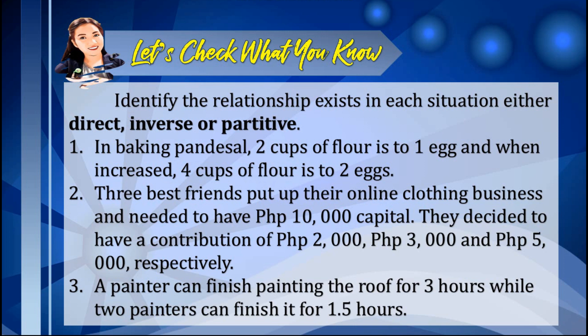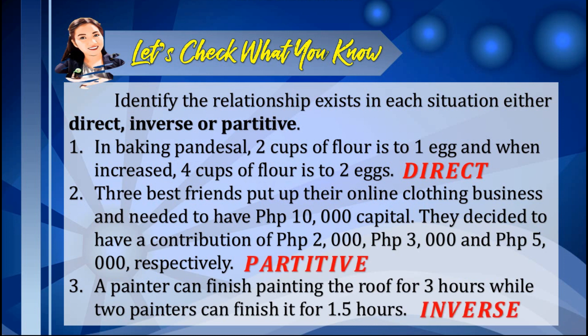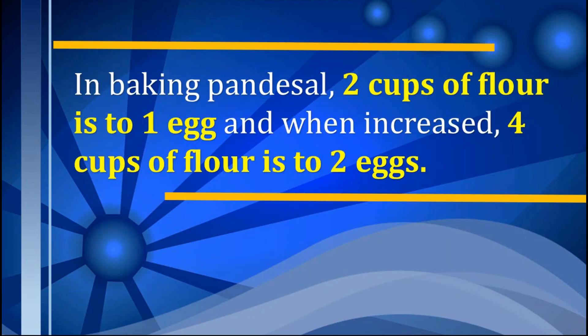Let us answer now. Item number one is an example of direct proportion. Number two is partitive proportion. And number three is inverse proportion. Now let us discuss each type of proportion, beginning with direct.